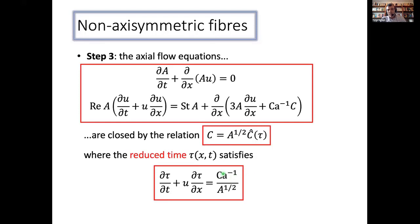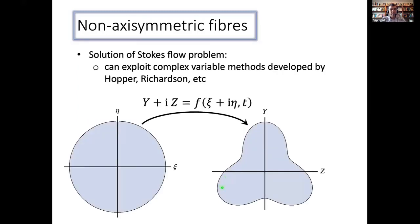And we can think about this physically. What's going on here is, so this inverse capital number is basically proportional to the surface tension. And I've got the square root of the area on the bottom. So if the tension increases or the area gets smaller, then the cross section evolves more rapidly. And that's kind of what we'd expect to happen. And so to solve the Stokes flow problem, you pick your own favorite method.